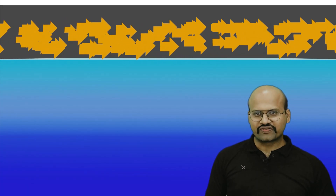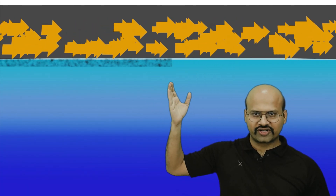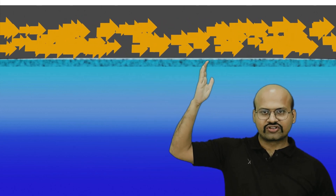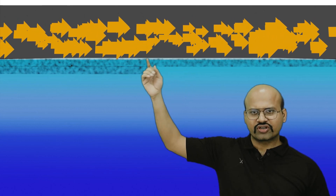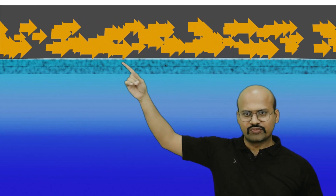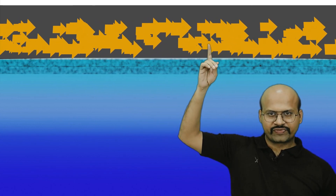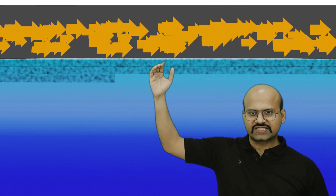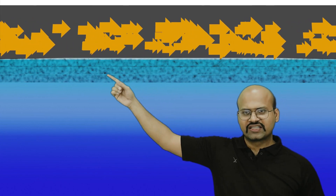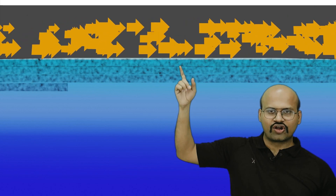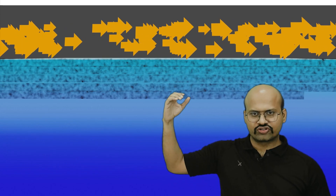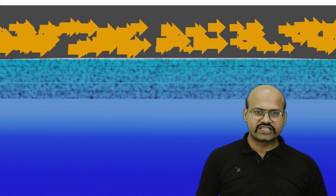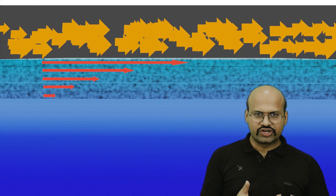In oceans, when wind flows over ocean water it applies a dragging force on the topmost layer, and because of friction this topmost layer moves along with the wind. Because of friction between the first layer and the second layer, the second layer also moves but with a reduced velocity. Similarly, subsequent layers also move, but their speed decreases as we go deeper in the ocean.